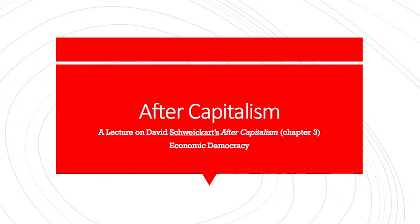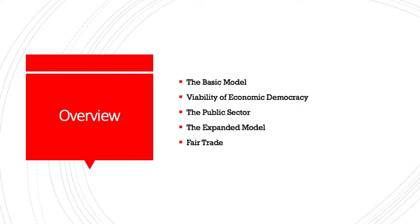In Chapter 3, Schweikert talks about the basic model of economic democracy. He also discusses the viability of economic democracy, considers what the public sector would look like, and offers an expanded model to discuss as well, and distinguishes between fair trade and free trade, and we will touch on each of those in this video lecture. One thing we will not talk about is the Mondragon Experiment, which Schweikert talks about in his book, because it provides a basic defense for his viability of economic democracy — something the reader can look at on his or her own. This is providing just an overview of the idea of economic democracy as developed by Schweikert in this chapter.